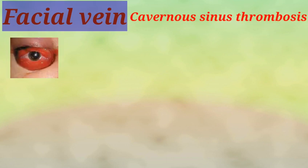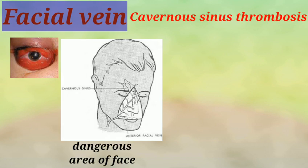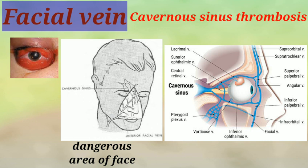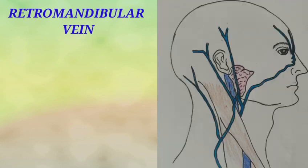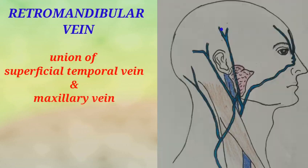Cavernous sinus thrombosis is a dreadful condition which occurs due to the spread of infection from the dangerous area of the face. The facial vein, since it drains the dangerous area of the face and is devoid of valves, can easily spread infection in a retrograde manner through its communications to the cavernous sinus.